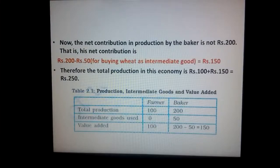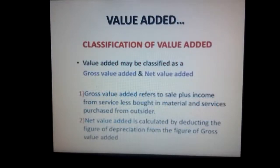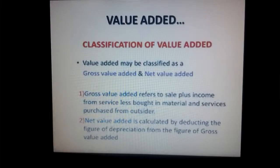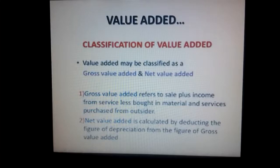The raw materials a firm buys from another firm which are completely used up in the production process are called intermediate goods. Therefore, the value added of a firm equals the value of production of the firm minus the value of intermediate goods used by the firm. The value added of a firm is distributed among its four factors of production — labour, capital, entrepreneurship and land. Therefore, wages, interest, profits and rents paid out by the firm must add up to the value added of the firm. Value added is a flow variable, and all variables are expressed in terms of money.